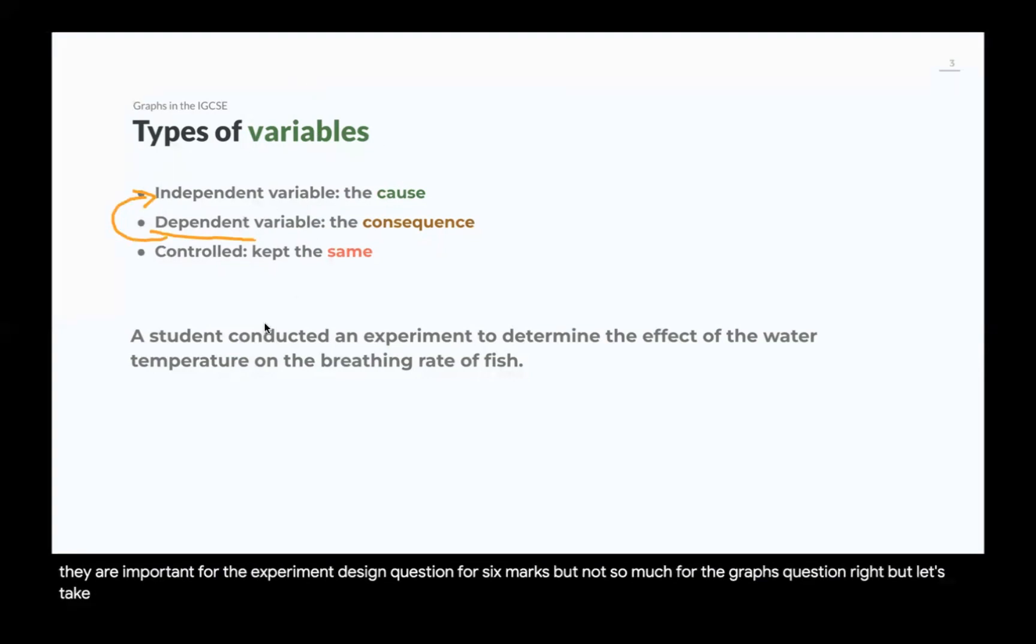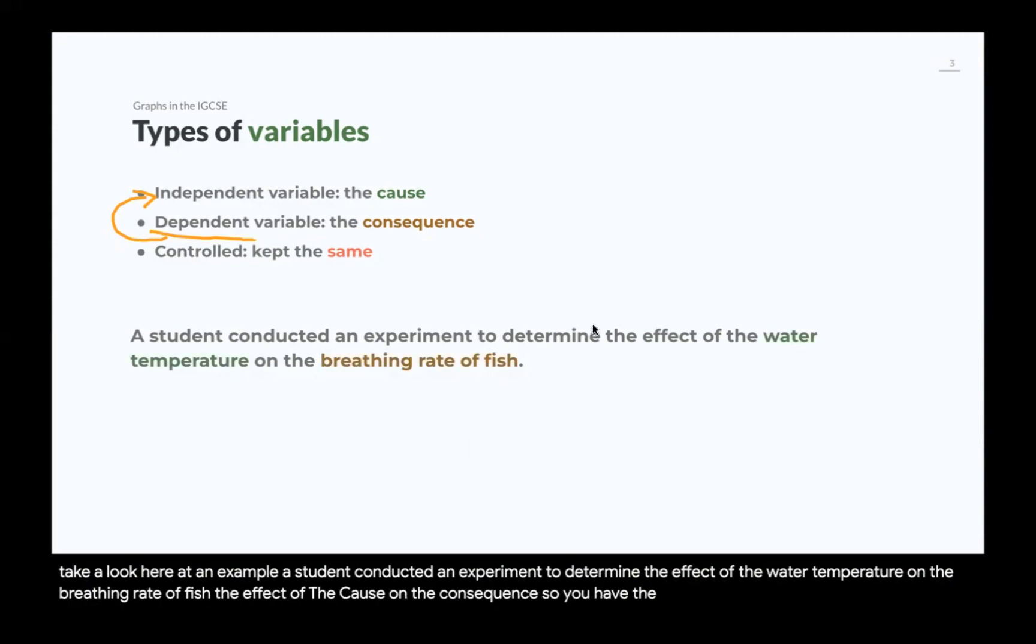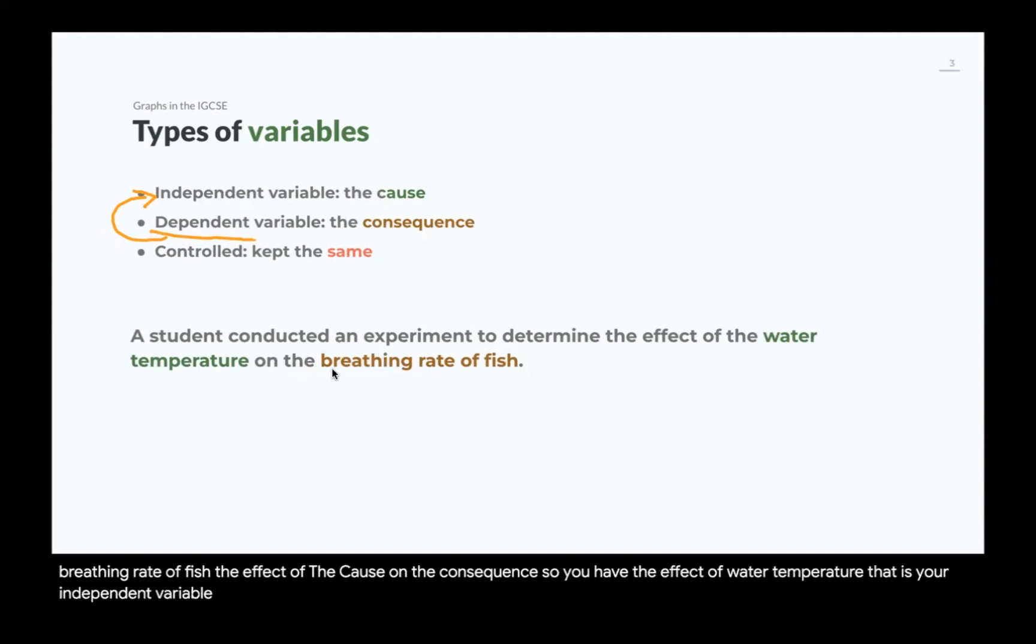Let's take a look here at an example. A student conducted an experiment to determine the effect of the water temperature on the breathing rate of fish, the effect of the cause on the consequence. So, you have the effect of water temperature, that is your independent variable, on the consequence, the breathing rate of fish, the dependent variable.